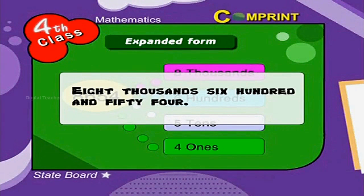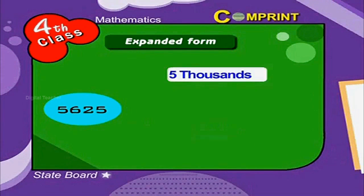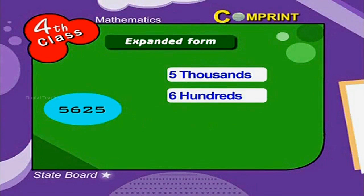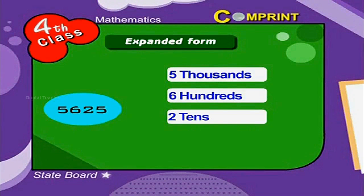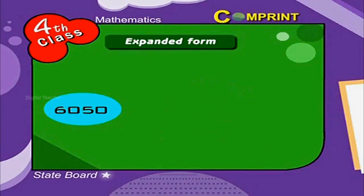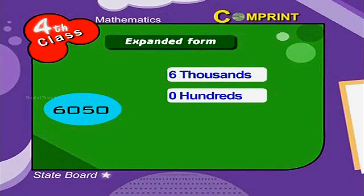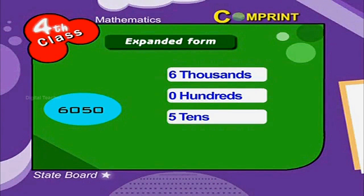Now let us see some more examples. 5625 can be written as 5000 plus 600 plus 20 plus 5 ones. In another number, 6050 is written as 6000 plus 0 hundreds plus 50 plus 0 ones.